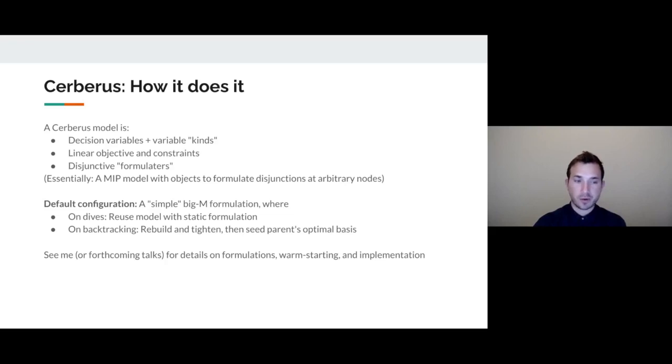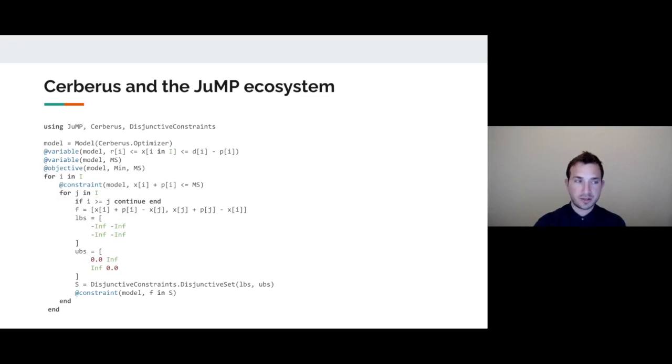I'm not going to go into more details on the formulations, the warm starting scheme, or the implementation, instead I want to show you a little bit of code. This is a Jump model for a simple scheduling problem that uses Cerberus as the underlying solver. This should seem pretty familiar if you used Jump before.